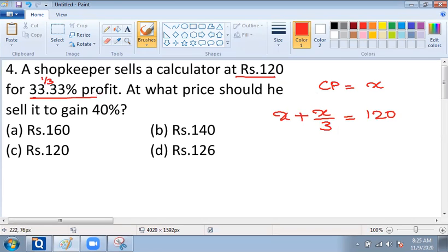So we can see that X plus X by 3 is equal to 120. That is 3X plus X upon 3 equals 120, and from this I can see that X is equal to 90.